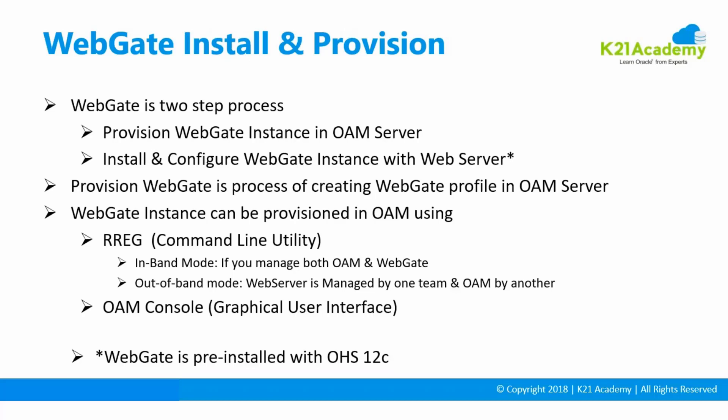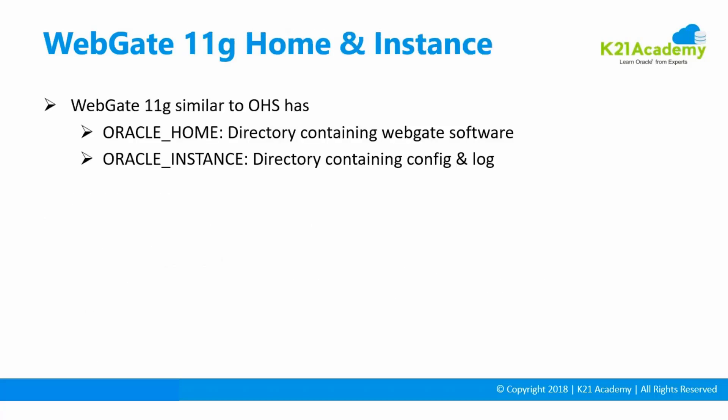The WebGate is pre-installed with Oracle HTTP Server 12C or Oracle Traffic Director 12C. When you install WebGate 11G or 12C, similar to Oracle HTTP Server, WebGate will also have an Oracle Home. In that home directory, you have WebGate artifacts and then you have the Oracle instance. Once we install Oracle WebGate, I'm going to show you how the Oracle Home looks.